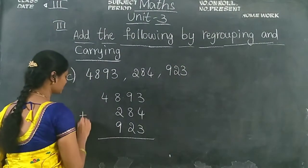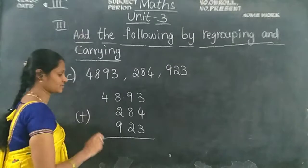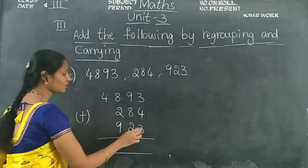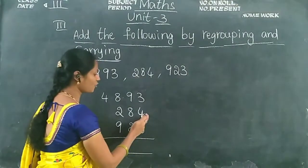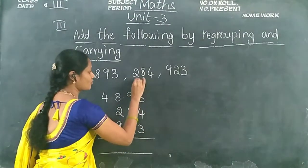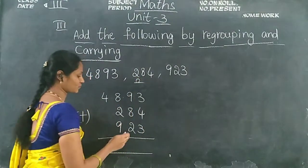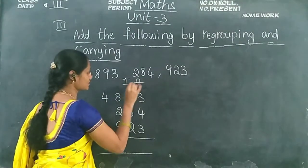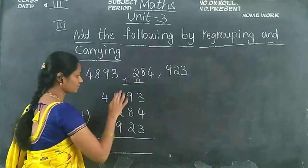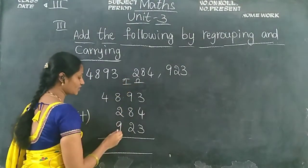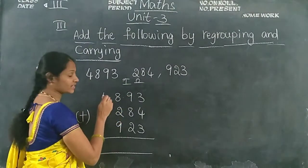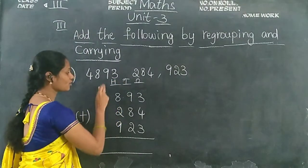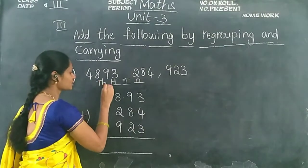What is the symbol of addition, children? Plus. So: 3, 4 and 3 are in the ones place; 2, 8 and 9 are in the tens place; 9, 2 and 8 are in the hundreds place; and 4 is in the thousands place.